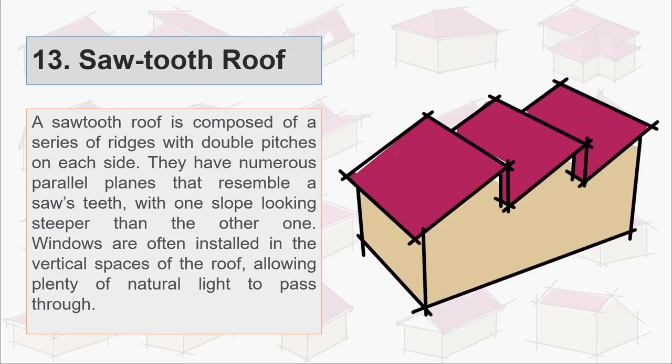Thirteenth is sawtooth roof. A sawtooth roof is composed of series of ridges with double pitches on each side. They have numerous parallel planes that resemble a sawtooth with one slope looking steeper than the other one. Windows are often installed in the vertical spaces of the roof allowing plenty of natural light to pass through.